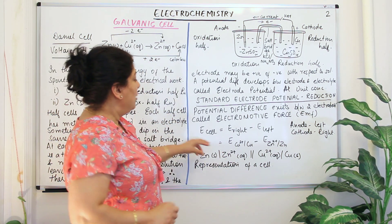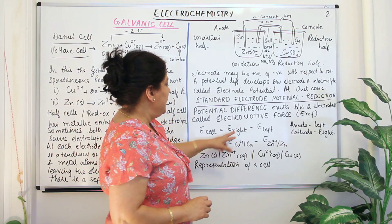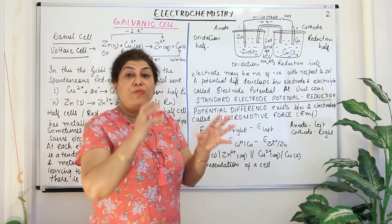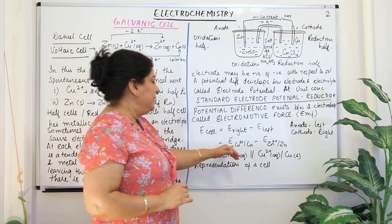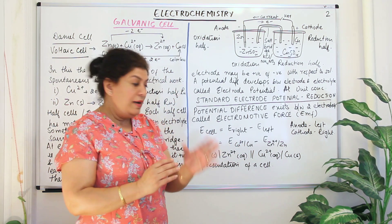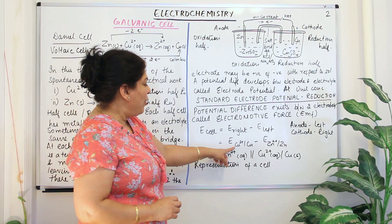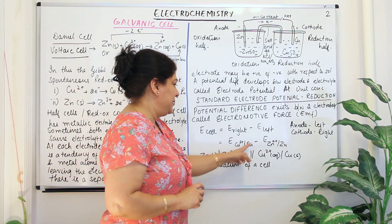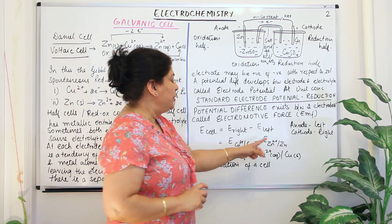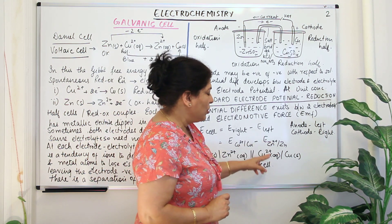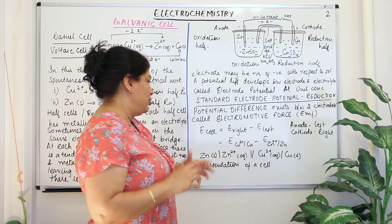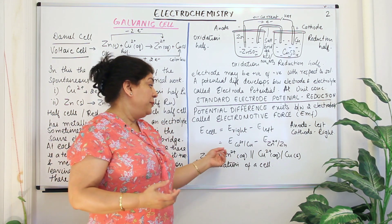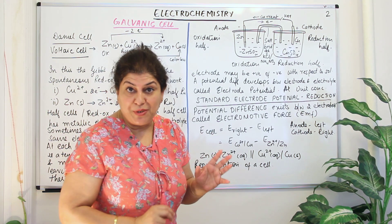For example, in this cell, E_right is the cathode — we have the copper electrode. How do you write an electrode? You write the oxidized and reduced form of the same metal with a slash between them. So EMF is E(Cu²⁺/Cu) minus E(Zn²⁺/Zn) — the oxidized and reduced forms written like this. This is convention, and when you solve numerical problems you must keep this in mind.